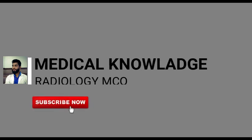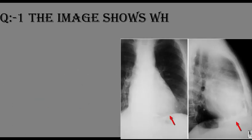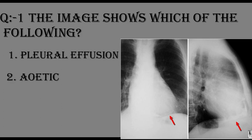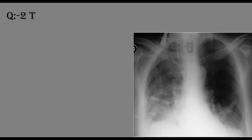Hello, welcome back to our channel. Medical knowledge MCQ session, second question. Question number one: the image shows which of the following? Number one: pleural effusion. Number two: aortic aneurysm. Number three: COPD emphysema. Number four: pericarditis.